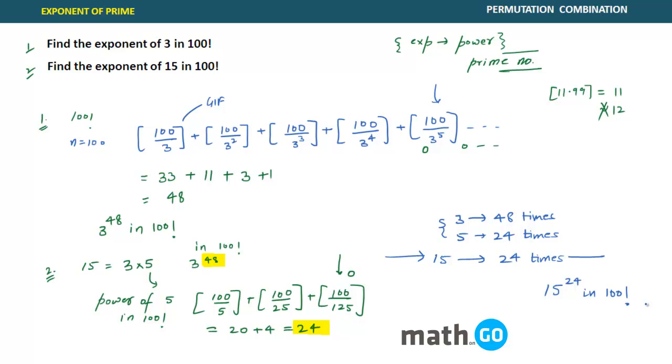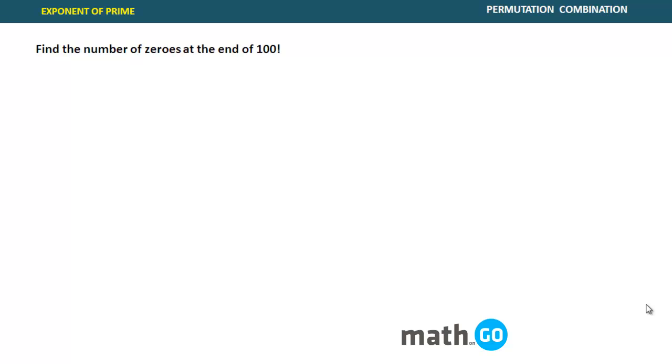Let's take another problem to understand exponent of a prime. Find the number of zeros at the end of 100 factorial. So you need to count number of zeros. When do you get a zero at the end of a number? Yes, when you have a multiple of 10. So that means it is asking exponent of 10 in 100 factorial. This is the question.